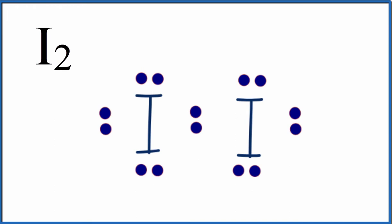So here's the Lewis structure for I2, and we see we have these two iodine atoms bonded together with a single bond. Since they're the same atom, that means they have the same electronegativity.